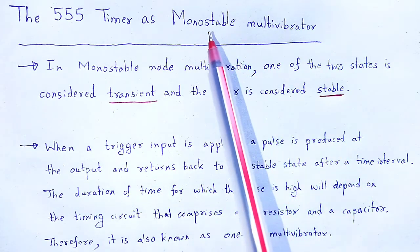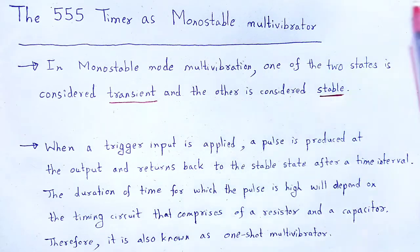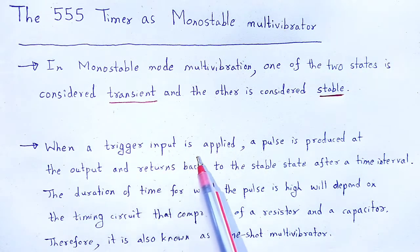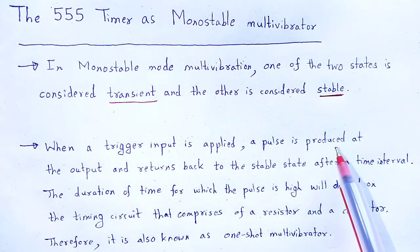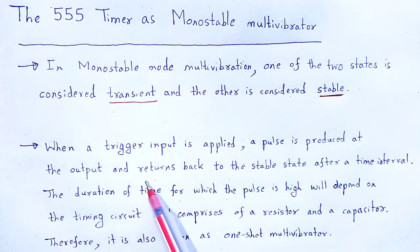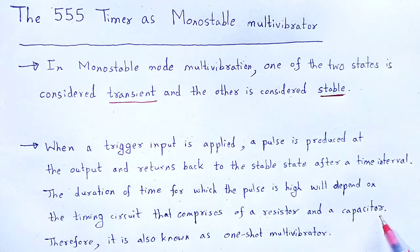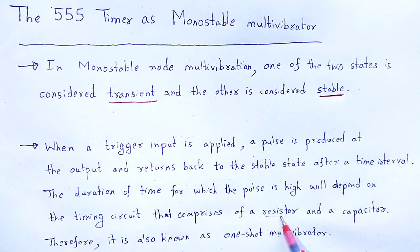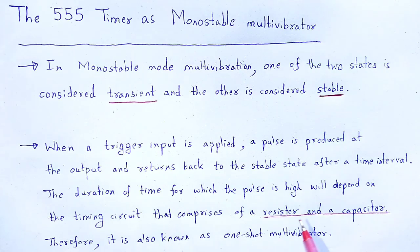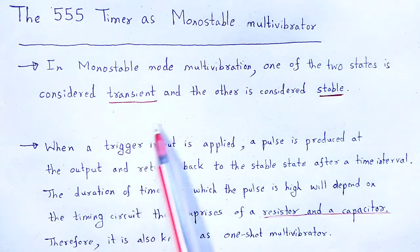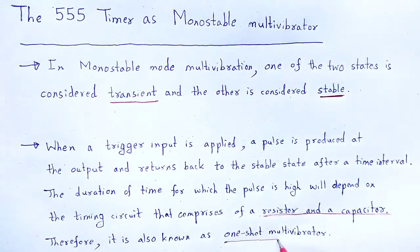In monostable multivibrator, when we apply a trigger input, a pulse is produced at the output and returns back to the stable state after a particular time interval. The duration of time for which the pulse is high depends upon the timing circuit comprising a resistor and a capacitor. We add a resistor and capacitor to the 555 timer IC to convert it to a monostable multivibrator. Due to that reason, as we apply a trigger input, it is known as one-shot multivibrator.